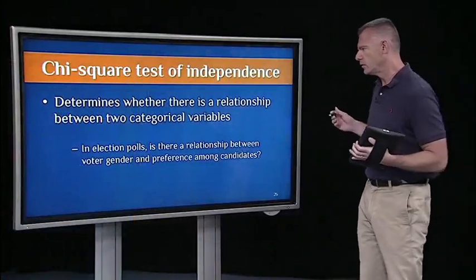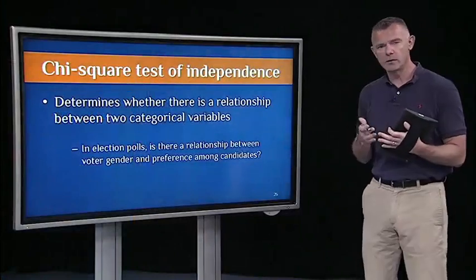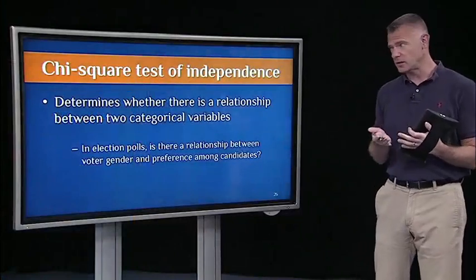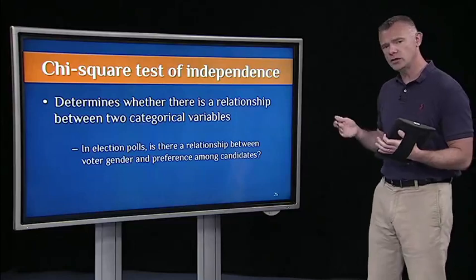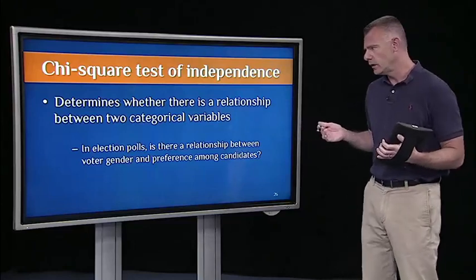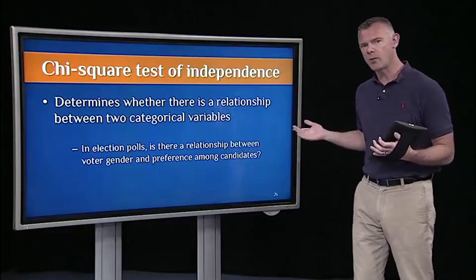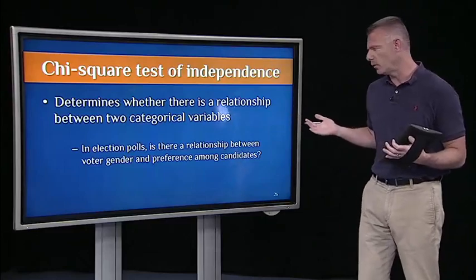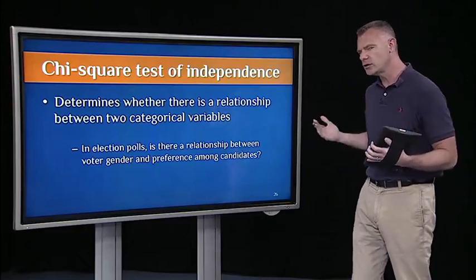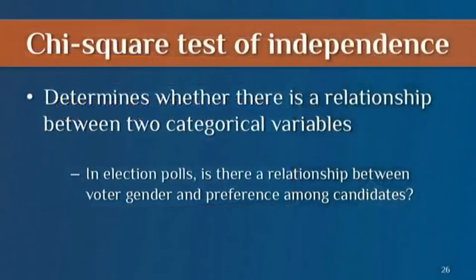The Chi-Square Test of Independence determines whether there's a relationship or a contingency between two categorical variables. The example I'm going to use is an election polling example where we're going to look at the relationship between the gender of the voter and their preference among candidates for the New York City mayoral election.